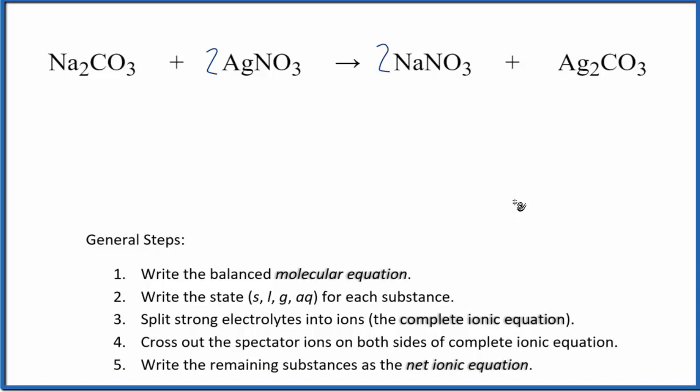Once we've done that, we need to write the states of each of the substances. So sodium compounds are usually soluble. We'll write AQ because it will be dissolved or dissociated into its ions. Silver nitrate, nitrates, very soluble. Aqueous. Then we have sodium nitrate. Nitrates and sodium, both pretty soluble. Put that there, aqueous. And then silver carbonate, let's look that up on a solubility table just to see, make sure we know what state that will be in.